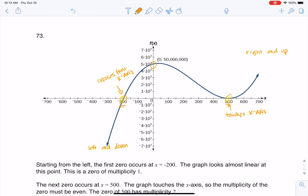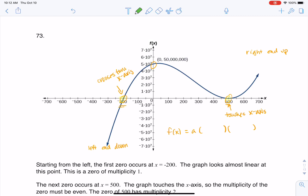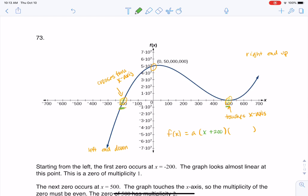So if I start to piece this together, I'll have f of x equals some stretch factor. And I have two x-intercepts, so I'm going to use those. So let me just change colors here so we can start to map this out. When I have negative 200, that's going to be x plus 200. And when I have positive 500, that's going to be x minus 500.